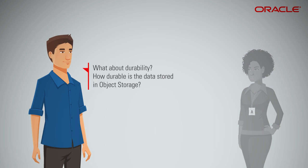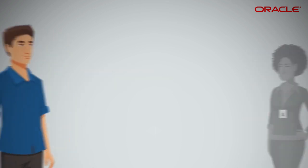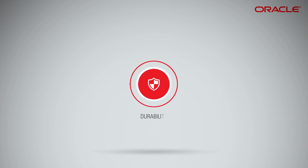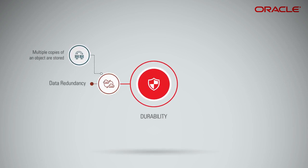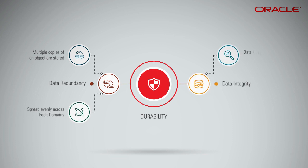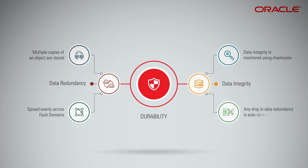Data stored in object storage is very durable. Multiple copies of an object are stored redundantly across multiple fault domains in a given region. Data integrity is monitored using checksums, and any drop in redundancy is auto-detected and remedied immediately without any customer impact.